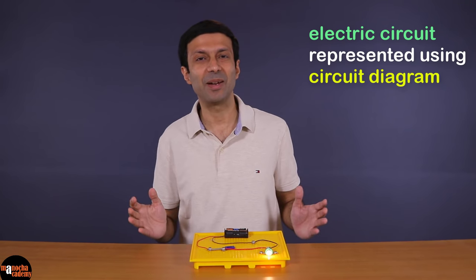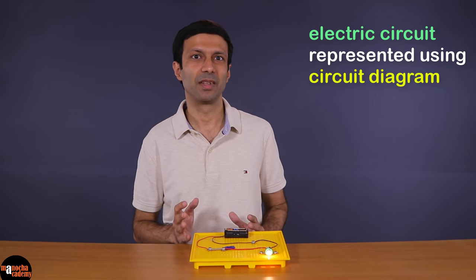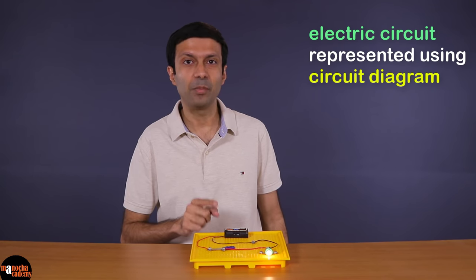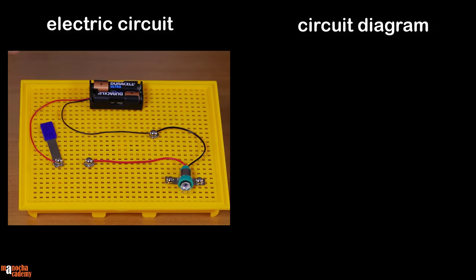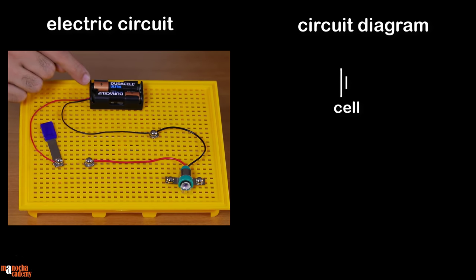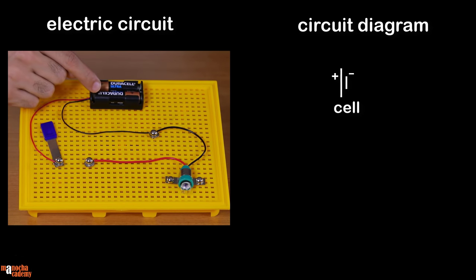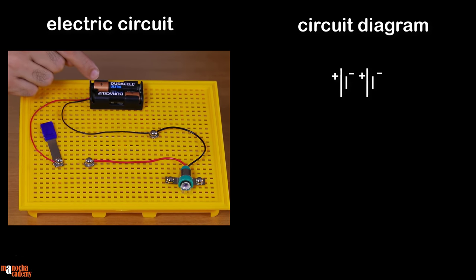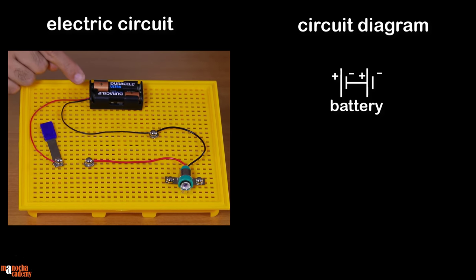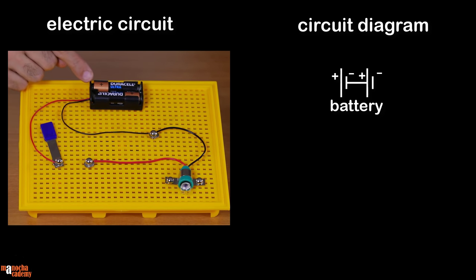You might have seen circuit diagrams in your textbooks. Let's draw the circuit diagram for this circuit. A cell is represented using these two lines — the longer line represents the positive terminal and the shorter line represents the negative terminal of the cell. Since there are two cells here, let's draw another cell. A group of two or more cells is called a battery.